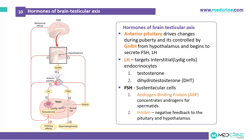The anterior pituitary gland (adenohypophysis) drives the changes during puberty and is controlled by gonadotrophin-releasing hormone produced by the hypothalamus. The pituitary gland produces follicle-stimulating hormone (FSH) and luteinizing hormone (LH). LH targets the interstitial cells (Leydig cells) to produce testosterone and dihydrotestosterone. FSH acts on the Sertoli cells to produce androgen binding protein that concentrates androgens for the spermatids, and inhibin hormone which acts as negative feedback to the pituitary gland and hypothalamus.